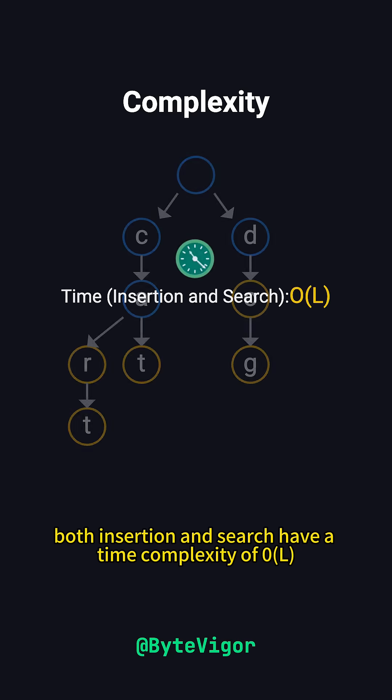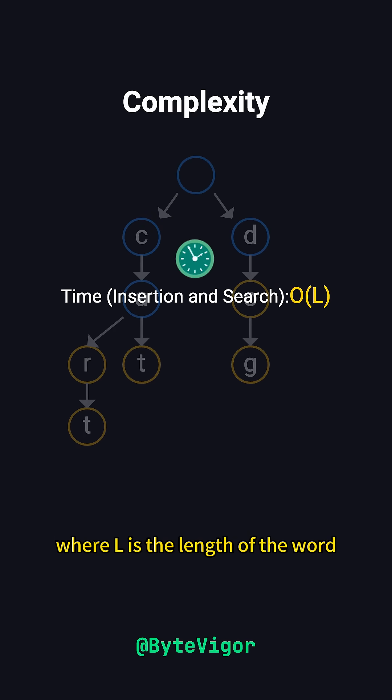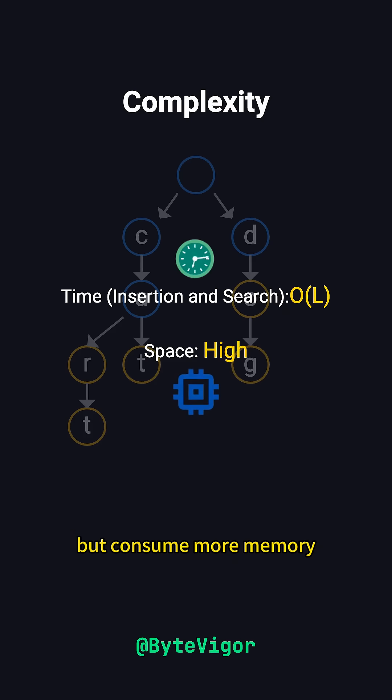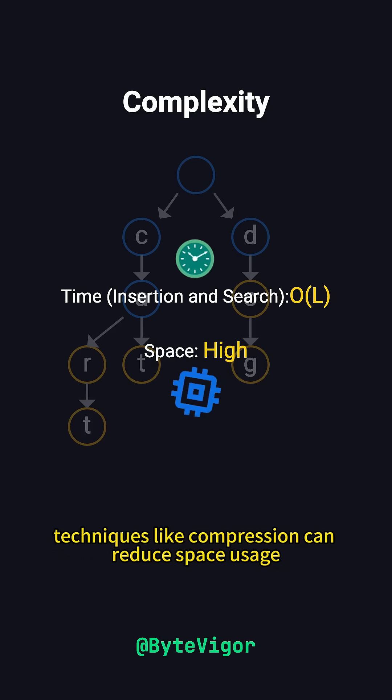In terms of complexity, both insertion and search have a time complexity of O(L), where L is the length of the word. Tries outperform hash tables in prefix matching, but consume more memory. However, techniques like compression can reduce space usage.